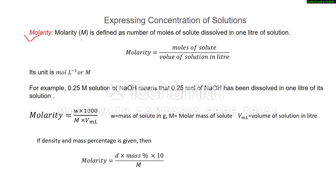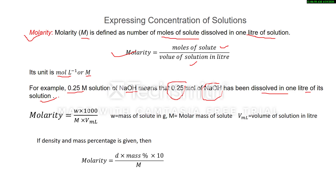Next is molarity, represented by capital M. It is defined as the number of moles of solute dissolved in one liter of solution. Mathematically, molarity equals moles of solute divided by volume of solution in liters. Its unit is mole per liter, also represented by capital M. If mass of solute (w) is given instead of moles, dividing w by the molar mass of solute gives the number of moles.